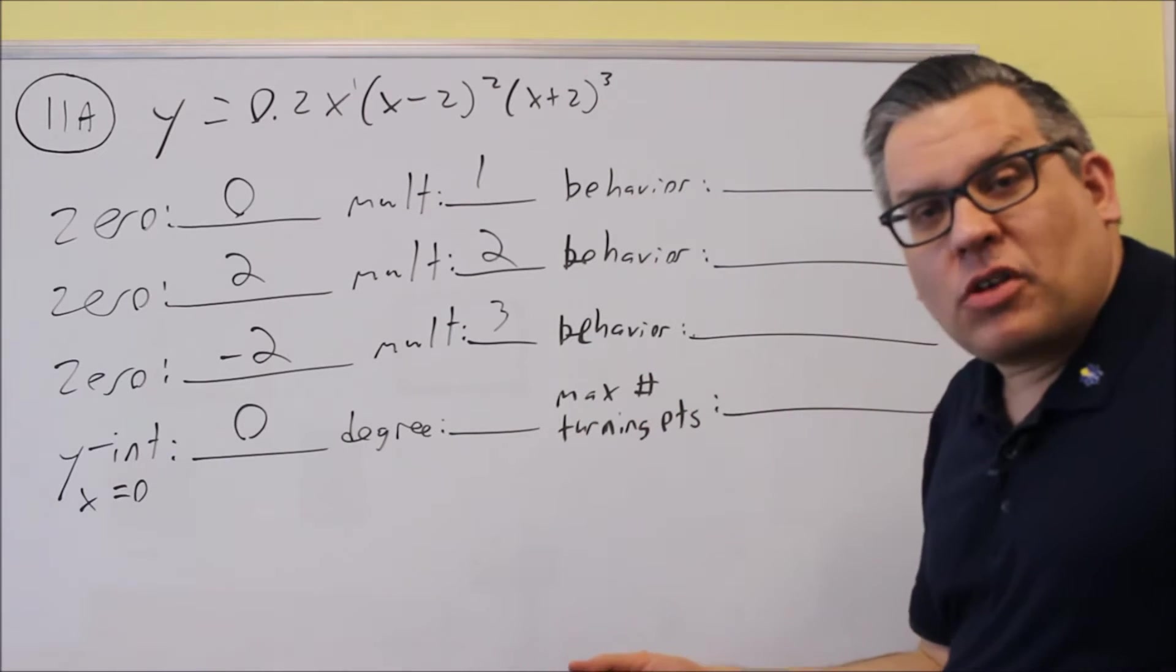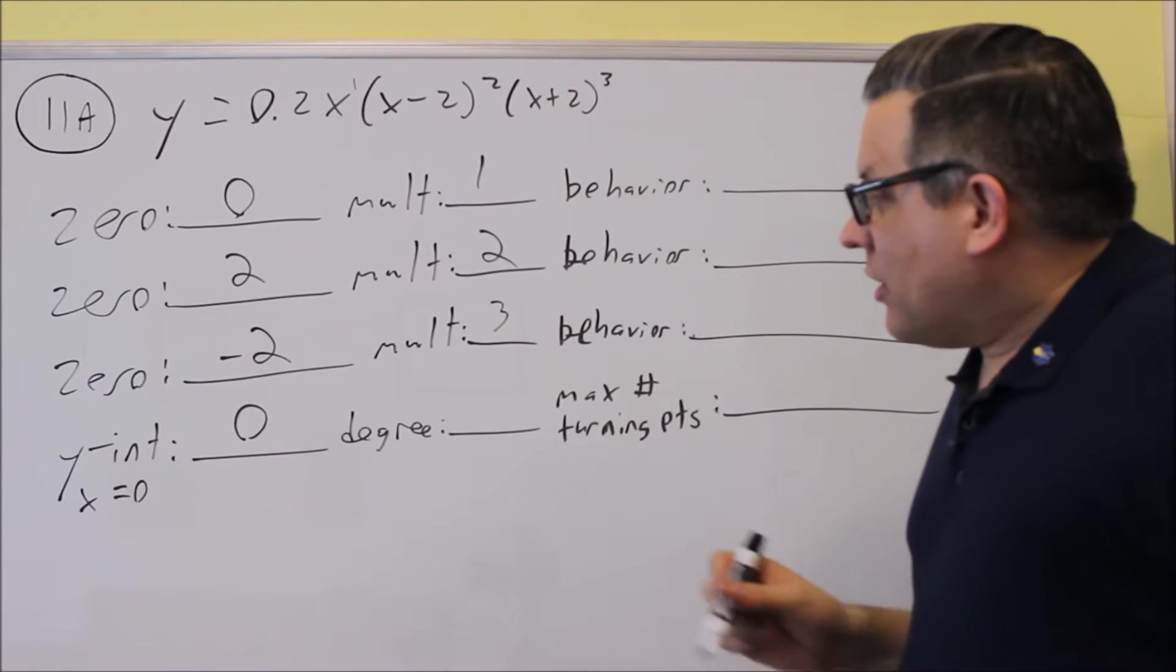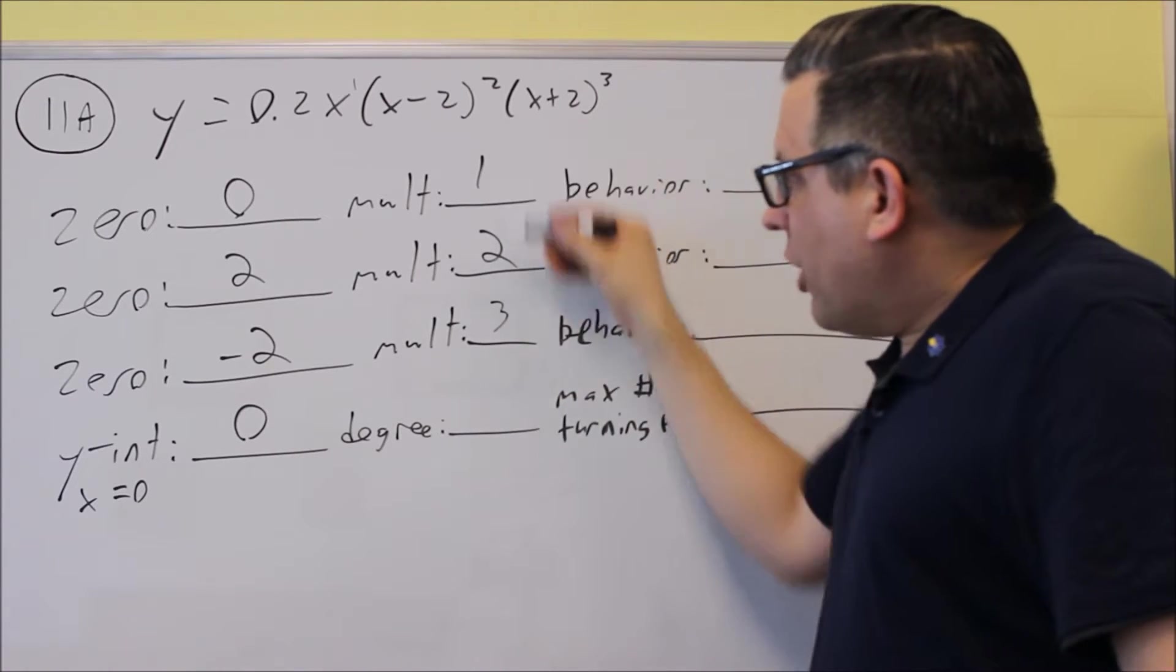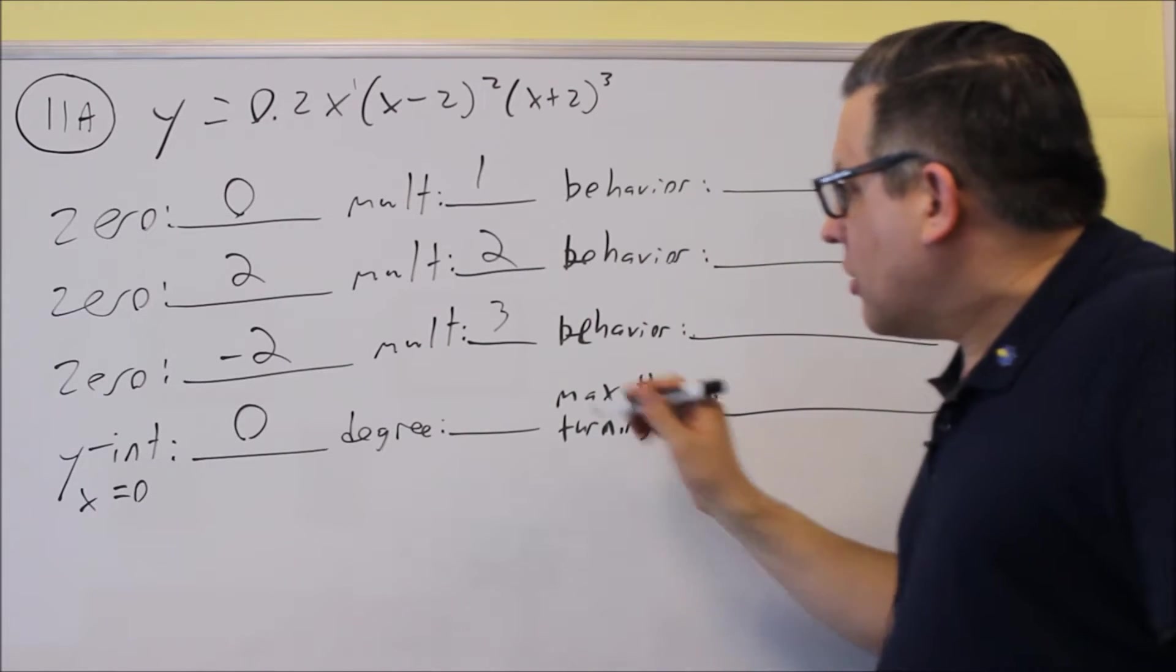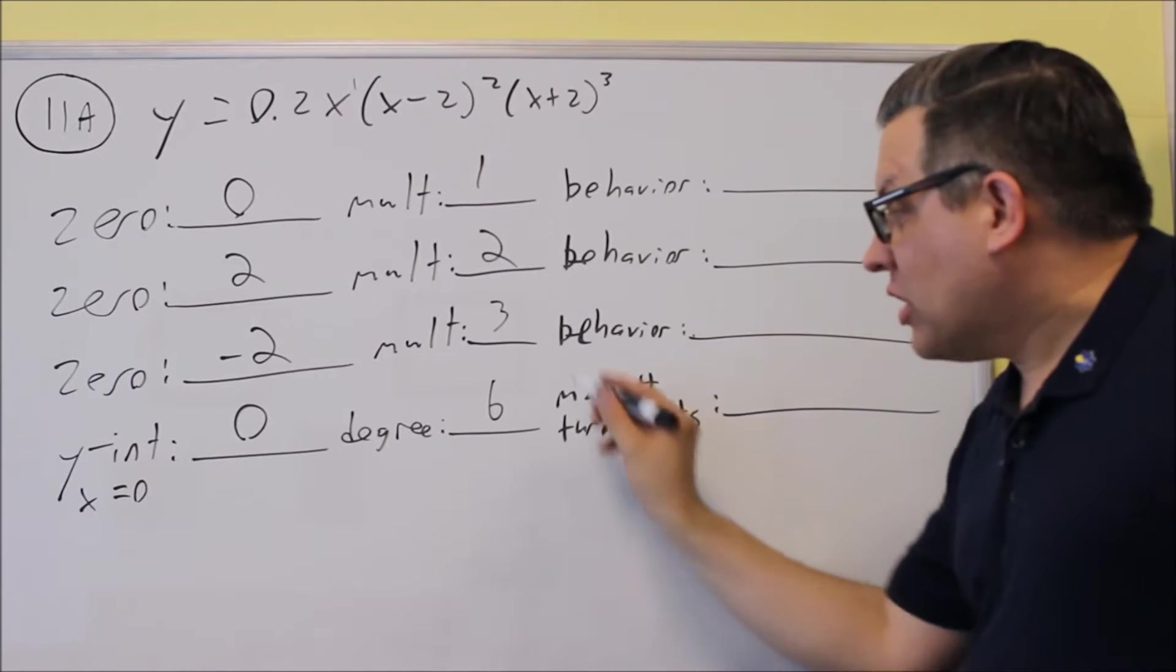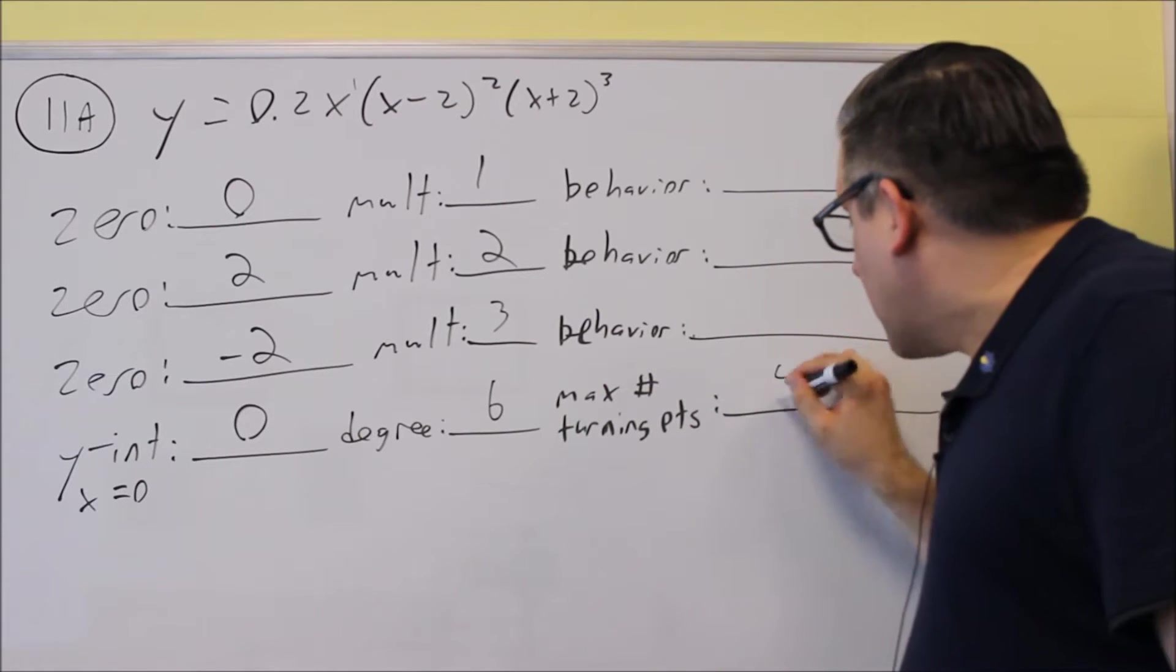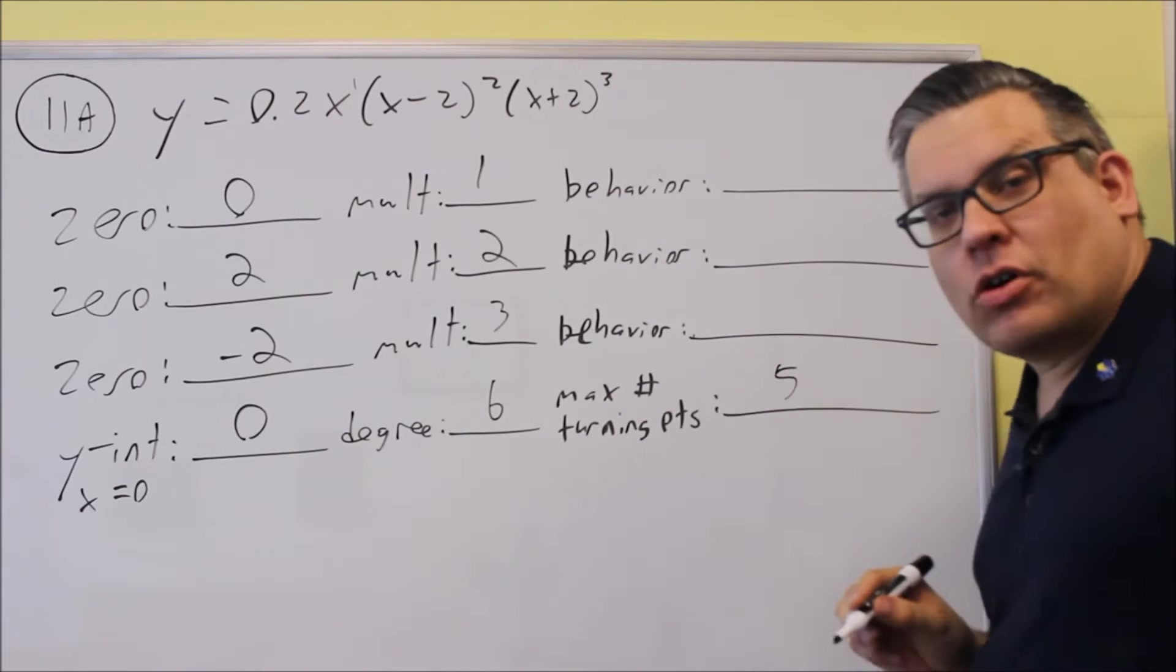On a test, you'll have something that's already going to be factored for you, so that way you can get the multiplicities right away. Now, the degree you get by adding the multiplicities together. So if I add that together, I'm going to get a degree of six. The max number of turning points is always going to be one less than your degree, and so that's going to be six minus one will be five.